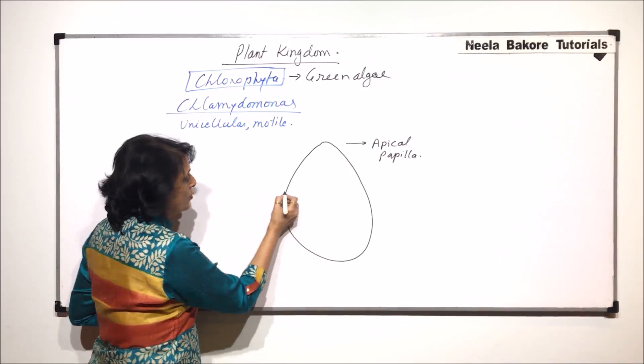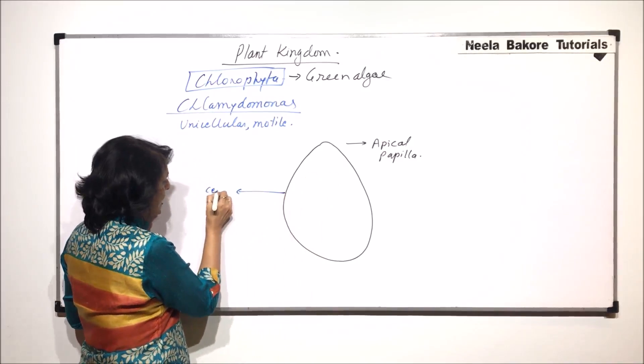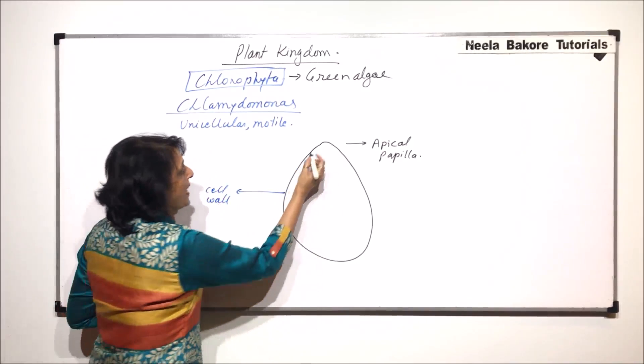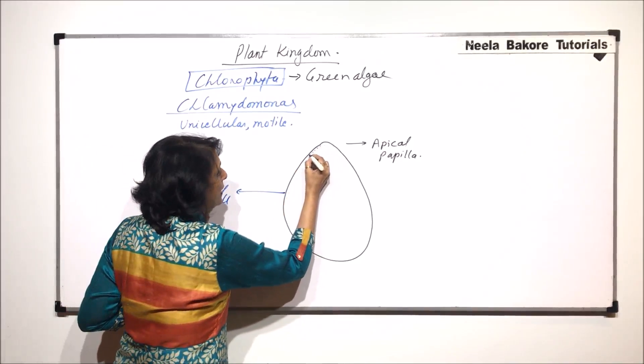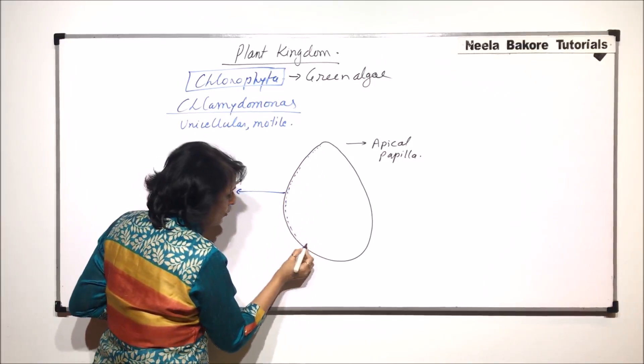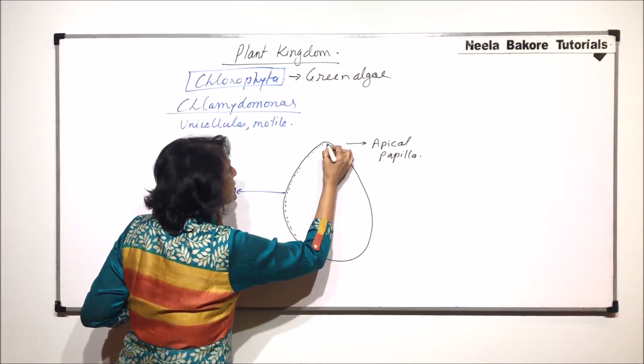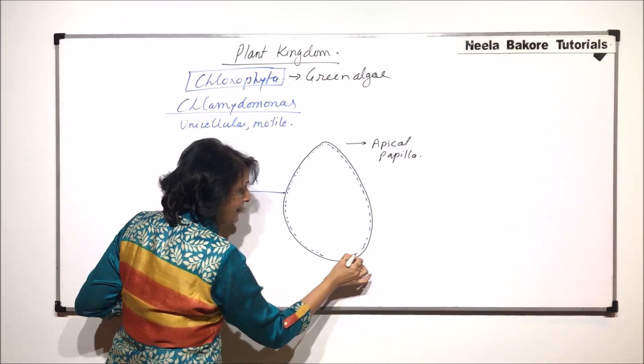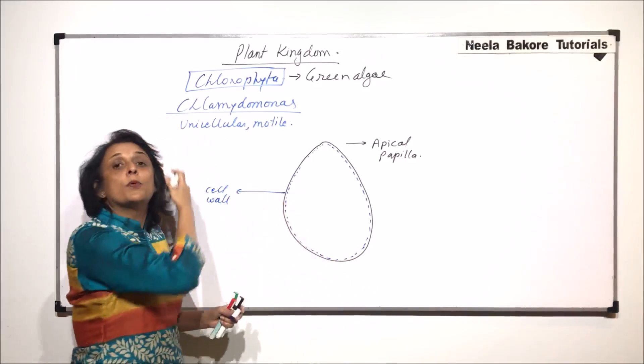This outer membrane is the cell wall which is made up of cellulose, and inner to it is the plasma membrane. If we talk about the plasma membrane and the stuff that is inside, that part is called the protoplast.